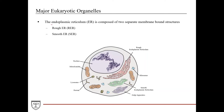First we have the endoplasmic reticulum, or the ER. It's composed of two separate membrane-bound structures or membrane-bound organelles: the rough ER, or RER, and then the smooth ER, or the SER. You'll see why they're named that in a second.